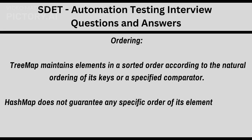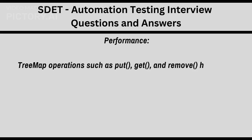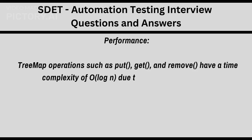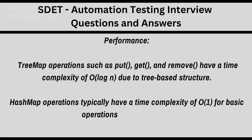HashMap uses a hash table for storage. Performance: TreeMap operations such as put, get, and remove have a time complexity of O(log N) due to tree-based structure. HashMap operations typically have a time complexity of O(1) for basic operations due to hashing.